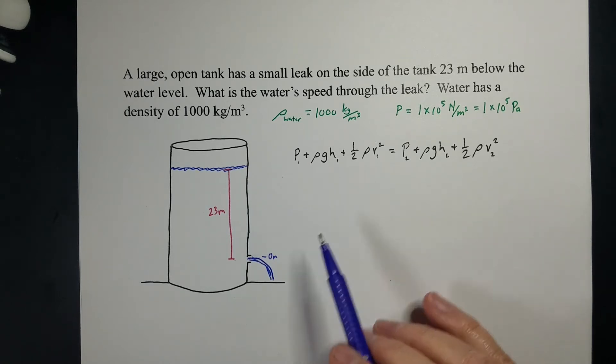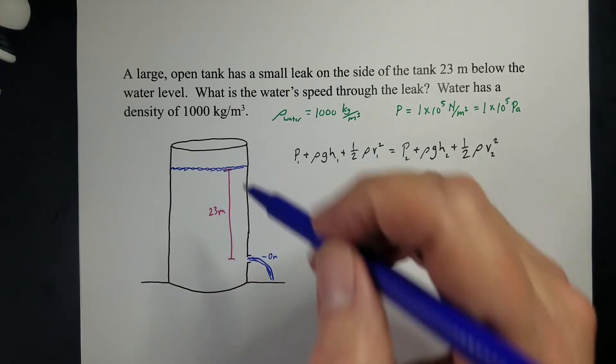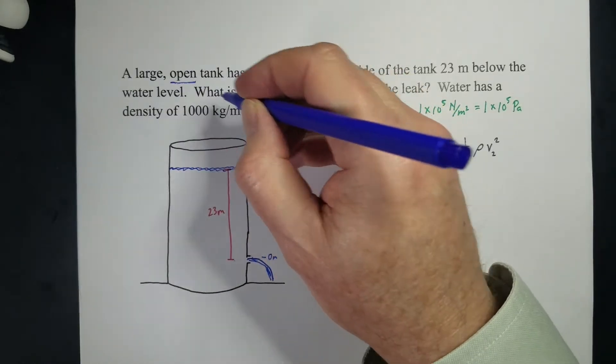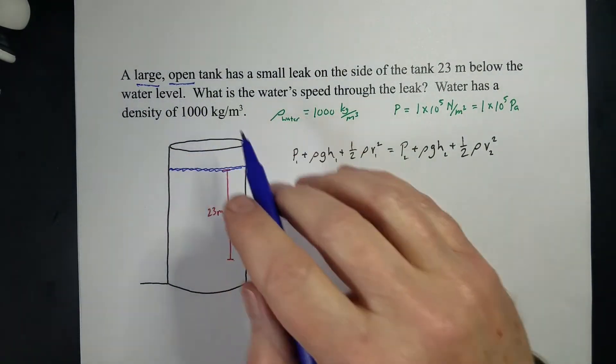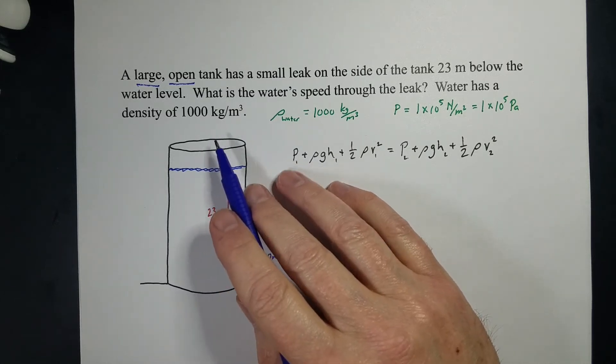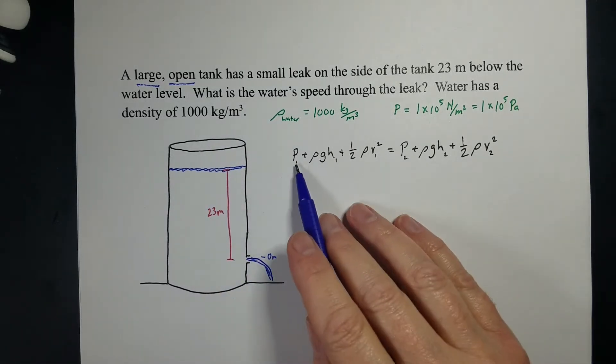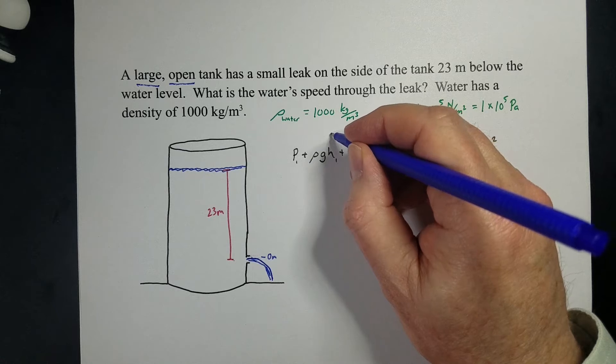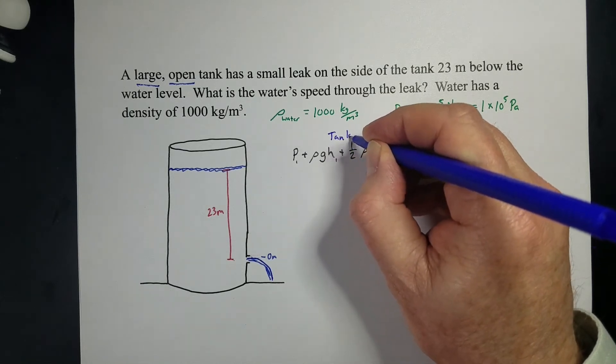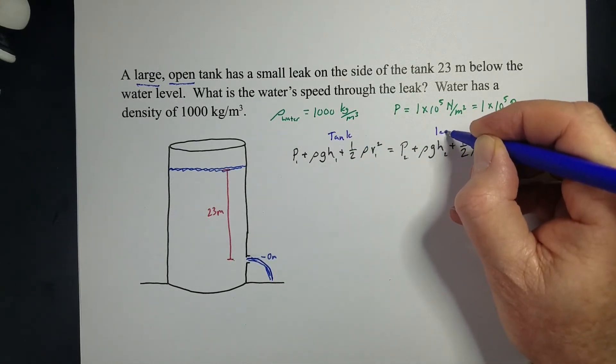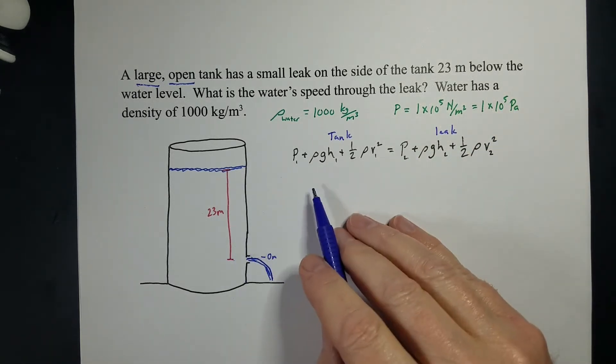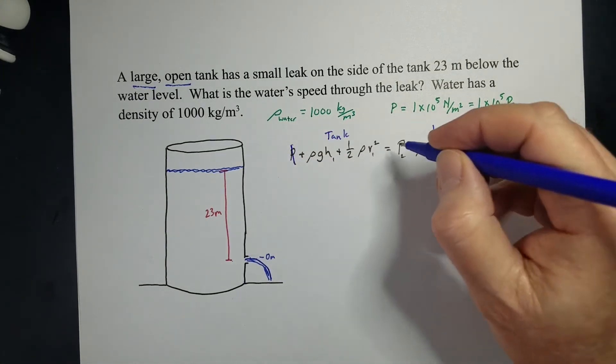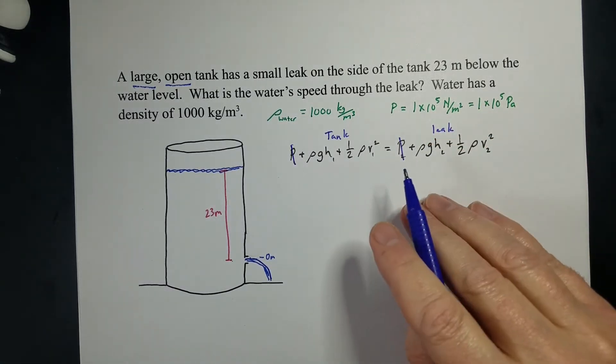Let's start off by looking at atmospheric pressure. So this is open. That's a key term, open and large. Those are very key terms. But open means this is open to the air, and this is open to the air. So both the tank and the leak are experiencing air pressure. They're open to the air. So this pressure and that pressure are the same, so they essentially cancel out.